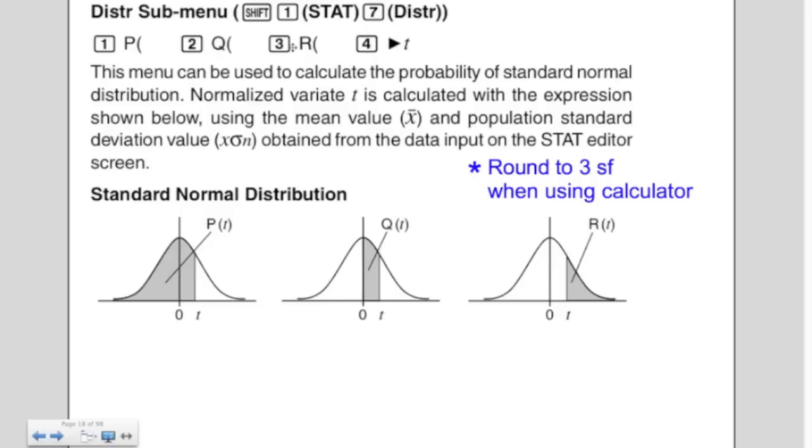This menu pops up: 1, 2, 3, or 4. You don't have to worry about 4. P, Q, and R we're interested in. If you hit P and then a number, it will give you that z value and all the way down, so basically what the table is giving you. If you hit Q, it's going to give you the z value from the middle to zero. It doesn't matter if it's positive or negative. And for number three, R is giving you that value and above. Now that is very handy.